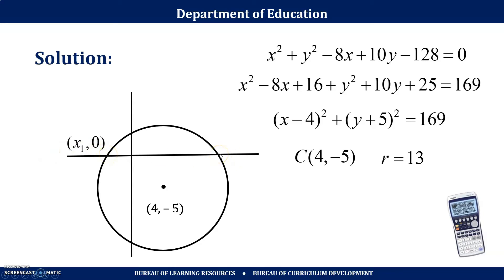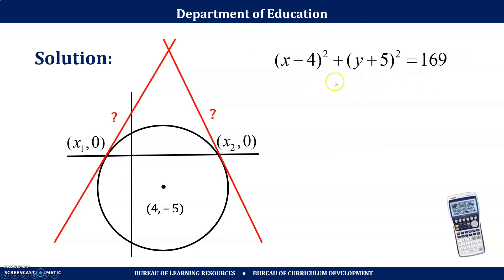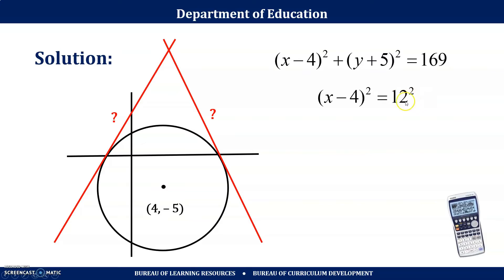Our goal is the equations of the two tangent lines. Since we already have the standard form of the circle, we can plug in the points of tangency. Since these points are on the circumference, y = 0, so we get (x − 4)² = 169 − 25 = 144. Note that 13² − 5² = 12² — a Pythagorean triple.